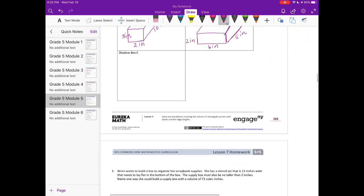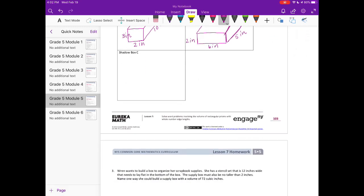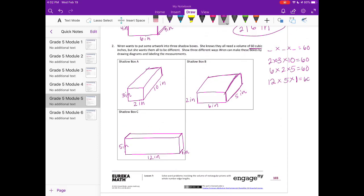And the last one, 12 by 5 by 1. It's going to be pretty long. So 12 by 5, and then just 1 inch wide. There are 3 different boxes that Wren could have made. There are others too, so you could have different ones than me. As long as your length by width by height multiplies to be 60, you are correct.